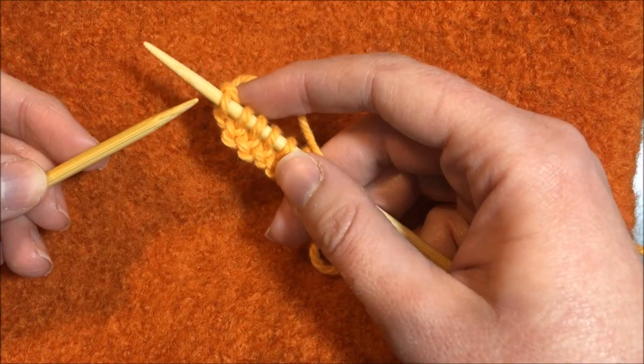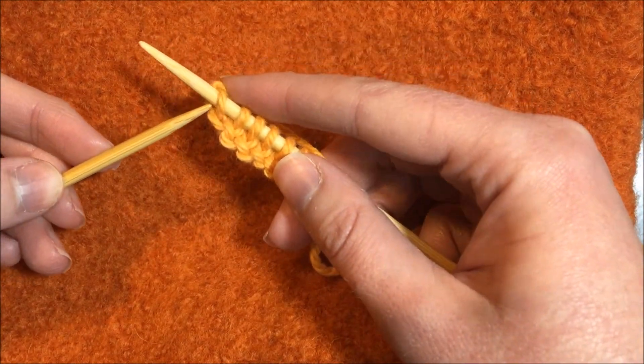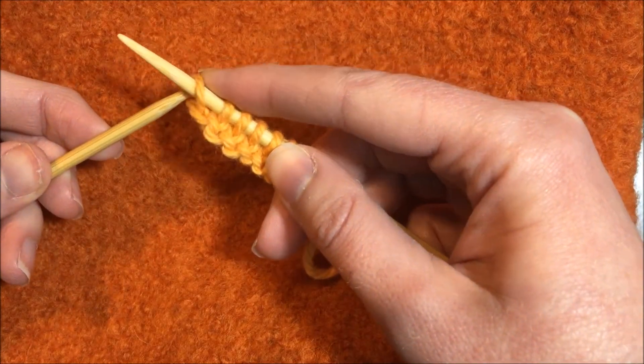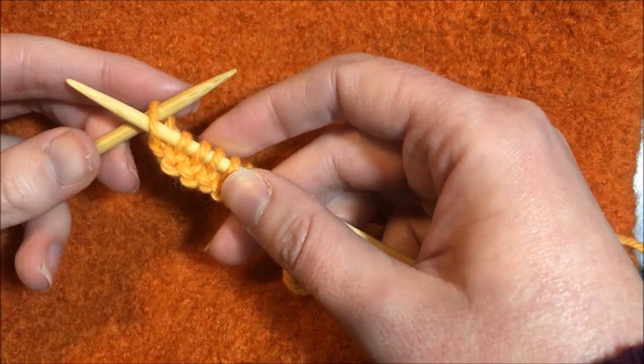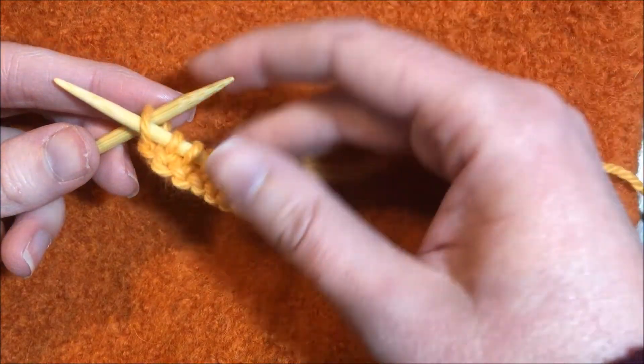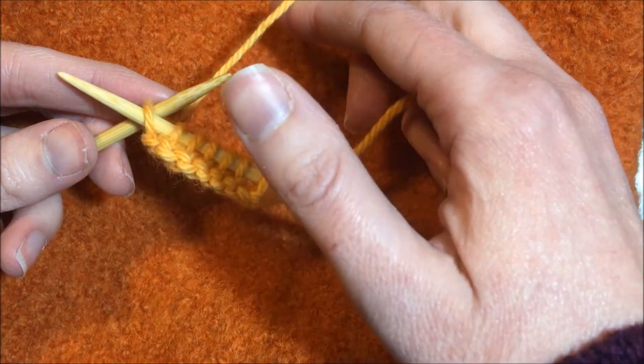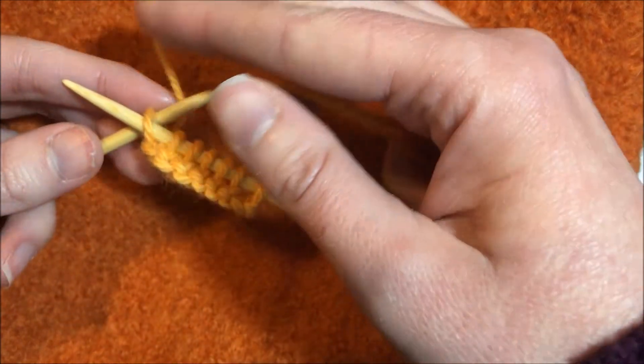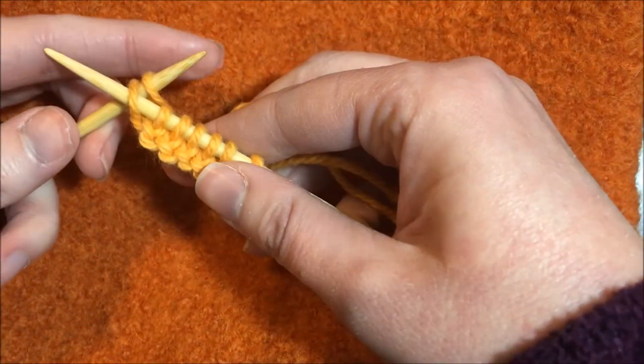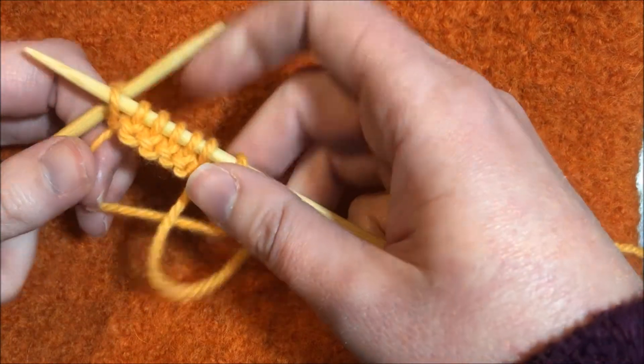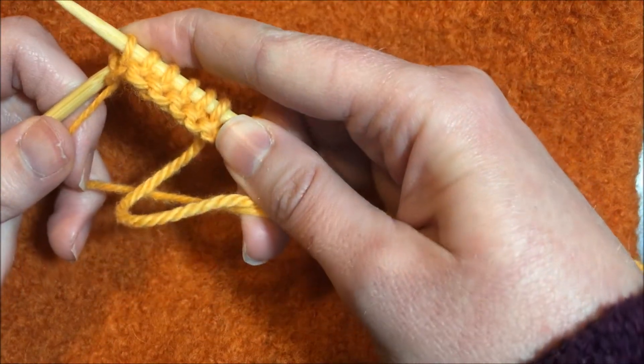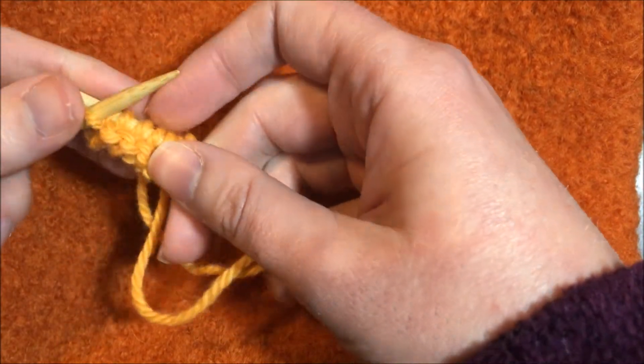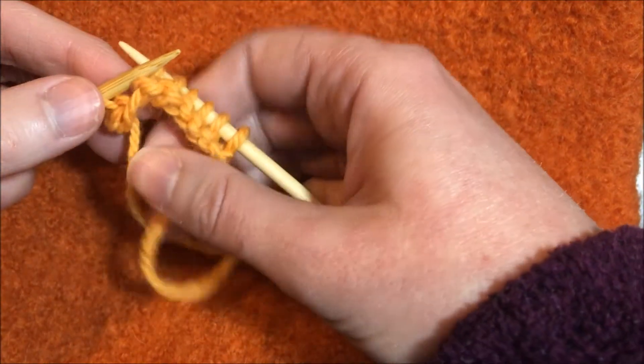So the way you start is by going through the back loop of the first stitch on the right hand needle with the left hand needle. And then you're going to wrap your yarn counterclockwise. So up over the back and across the top. And then you pull that stitch through and then slide the old stitch off the right hand needle.